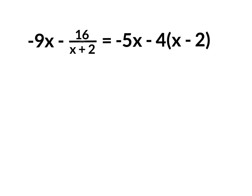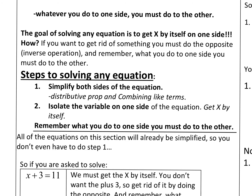Step one on solving any equation is to simplify both sides of the equation. Steps to solving any equation: Step one — simplify both sides. What does that mean? If there's any distributive property, do it. Then if there's any combining like terms, do that: add x's with x's, numbers with numbers. You always multiply before adding or subtracting, so distributive property first, then combining like terms. Do that to each side.